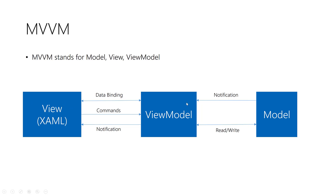How does communication and data transfer happen between these layers? When I have a text box in the view and a property in the ViewModel, the communication happens using something called data binding — we'll talk about this in another video. When I want to invoke a function in the ViewModel from the view, we use something called commands. And when data changes inside the ViewModel and we want to reflect this in the UI, this happens using notifications.